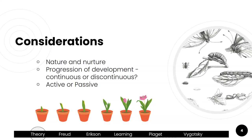The belief in this field is that you are born with certain propensities. For example, Einstein was born with a propensity for being highly intelligent, and because of his environmental stimulation, that gene was nourished and thus we got Einstein. In terms of progression of development, is it continuous or does it happen in stages? Are we an active or passive recipient of our environmental factors?